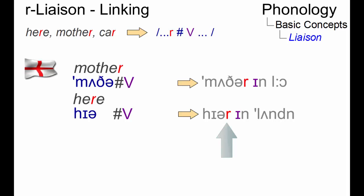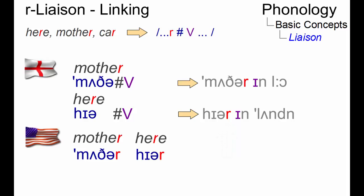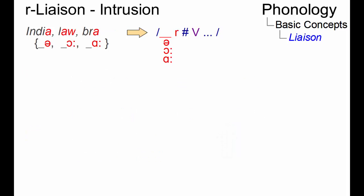Since American English is highly rhotic, linking is a standard feature of it anyway. The phenomenon of intrusion, or the intrusive R, is confined to the non-rhotic varieties of English.